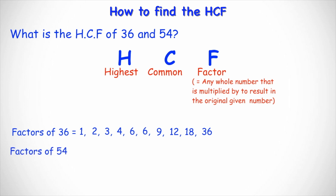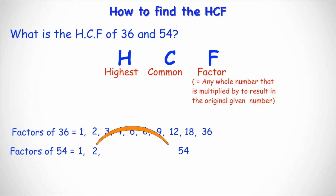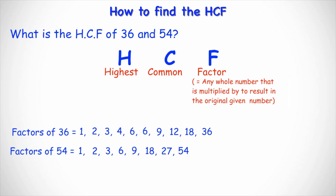Similarly we find all the factors of 54. We have 1 and 54, then 2 and 27 because 2 times 27 equals 54. Does 3 go into 54? Yes — 54 divided by 3 is 18, so 3 and 18. Does 4 go into 54? No, it can't be divided exactly by 4. Same with 5. Then 6 goes into 54 giving 9, because 6 times 9 equals 54. Those are all the factors of 36 and 54.